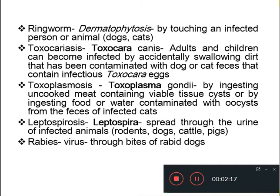Next is Toxocariasis, which is caused by the nematode Toxocara canis. Adult humans and children can become infected by accidentally swallowing dirt contaminated with dog or cat feces containing infectious Toxocara eggs. If infected dogs or cats pass feces containing the eggs, accidental swallowing of such contaminated dirt leads to Toxocariasis in humans.